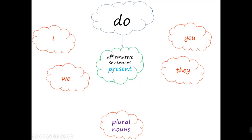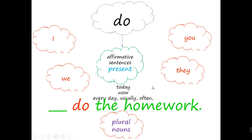How can we know if a sentence is in the present? Because of the verbs, or because we have words like today, now, every day, usually, often — those are adverbs of frequency. So that's when we use "do." For example: I do the homework, we do the homework, you do the homework, they do the homework, my parents do the homework, my friends do the homework, the boys at school do the homework. You always only change the subject, which has to be one of these pronouns or a plural noun.